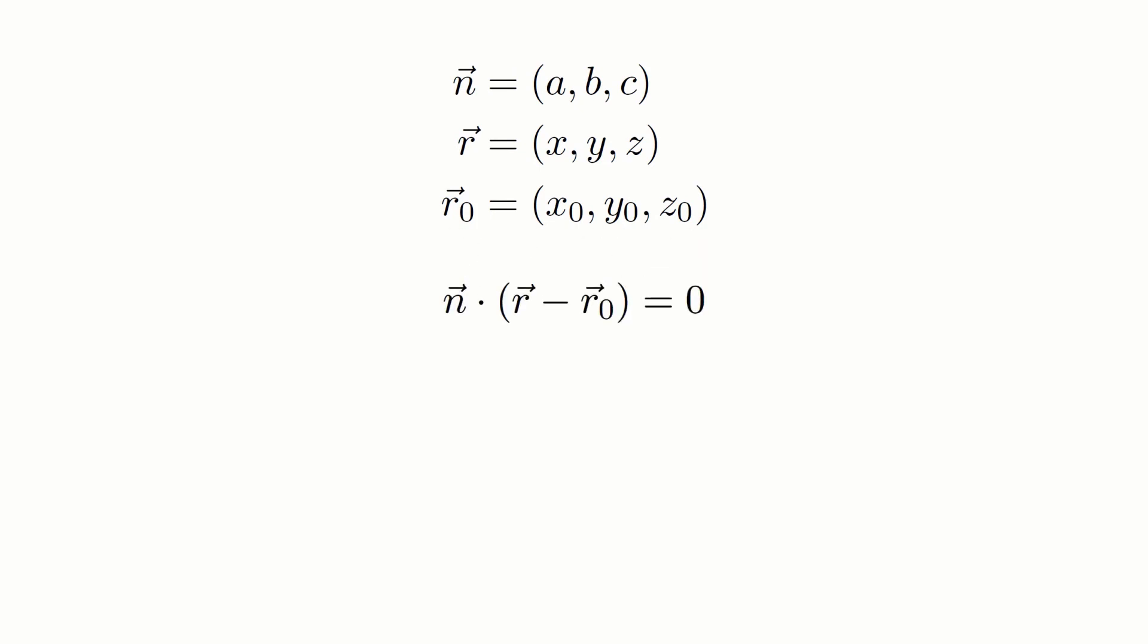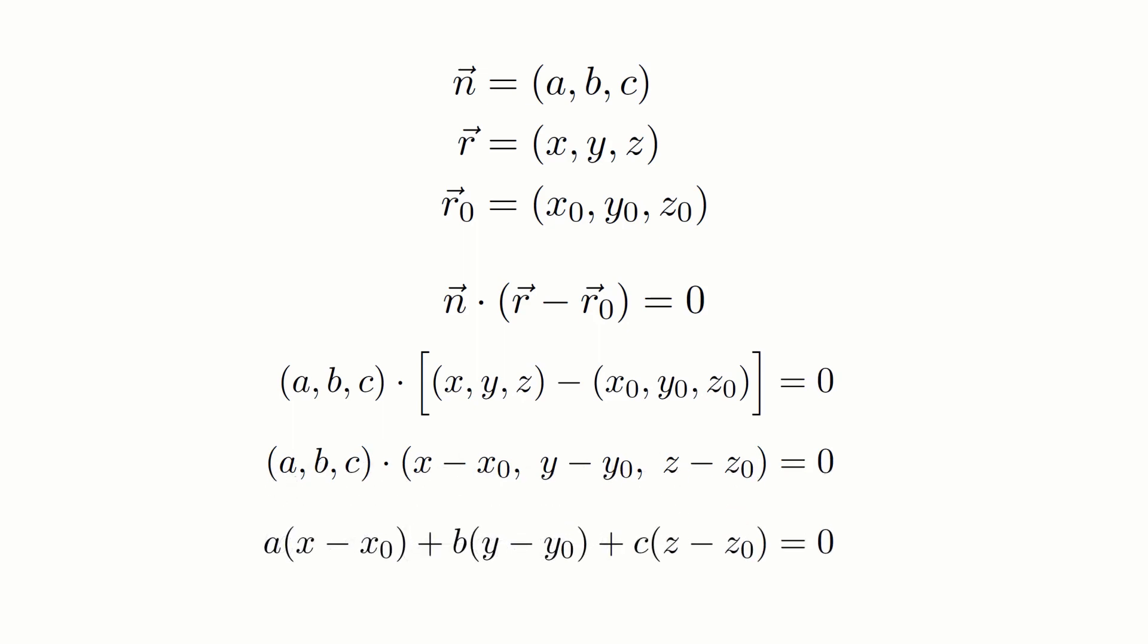Let's plug them into our vector equation. Now we'll subtract the two vectors in the brackets component by component. This leaves us with a, b, c dotted with the vector x minus x0, y minus y0, z minus z0. Now remember, to compute the dot product of two vectors, we multiply respective components and add the results. So a goes with x minus x0, b goes with y minus y0, and so on. And so at last, we get our final equation. a times x minus x0 plus b times y minus y0 plus c times z minus z0 equals 0. And this is a pretty standard equation used to describe a plane.